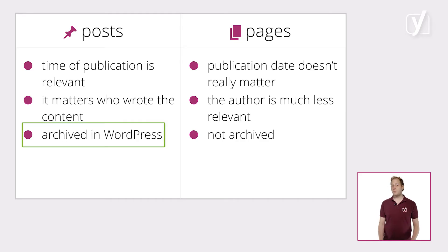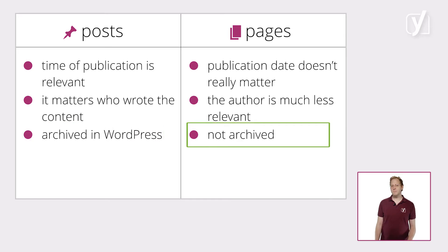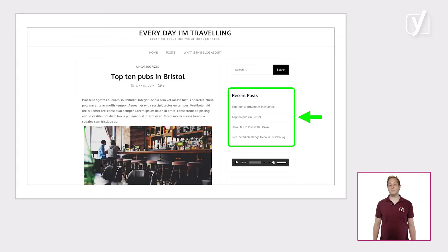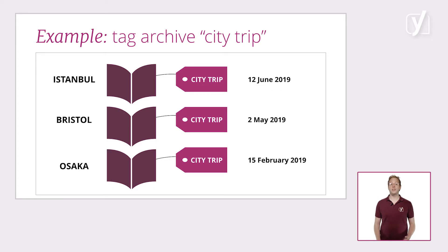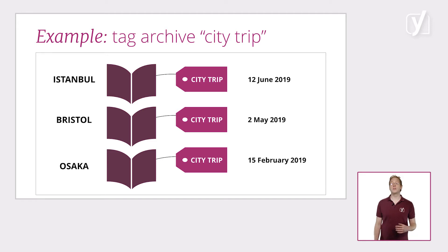Thirdly, posts are archived in WordPress, whereas pages aren't. You can show your recent blog posts in a widget, for example. You also have pages that show archives of posts within certain blog categories or within certain tags — we'll come back to that in the next module. But your most recent posts show up at the top here as well. So again, there's the element of time and recency.